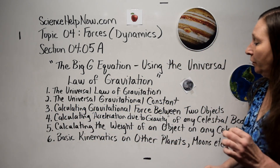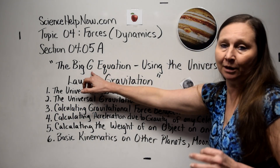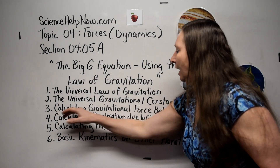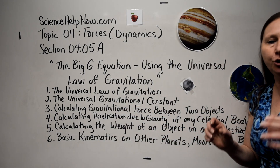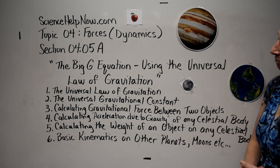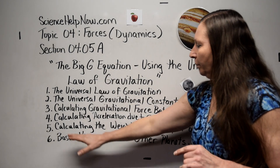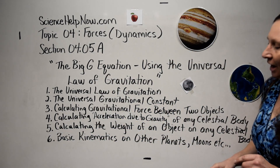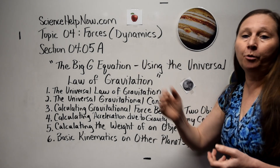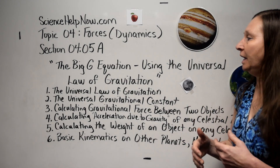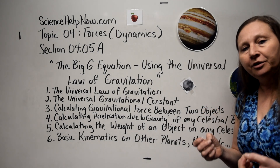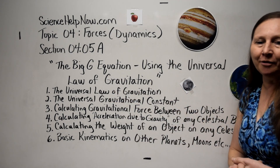Number two is the universal gravitational constant — that's the big capital G that appears in the universal law of gravitation. And we'll be calculating the gravitational force between two objects — two protons or two planets, whatever. In section B, we'll be covering the other four topics. You want to watch video 4.5a, finish the problems, and then follow up with video 4.5b to get a thorough understanding of the universal law of gravitation.